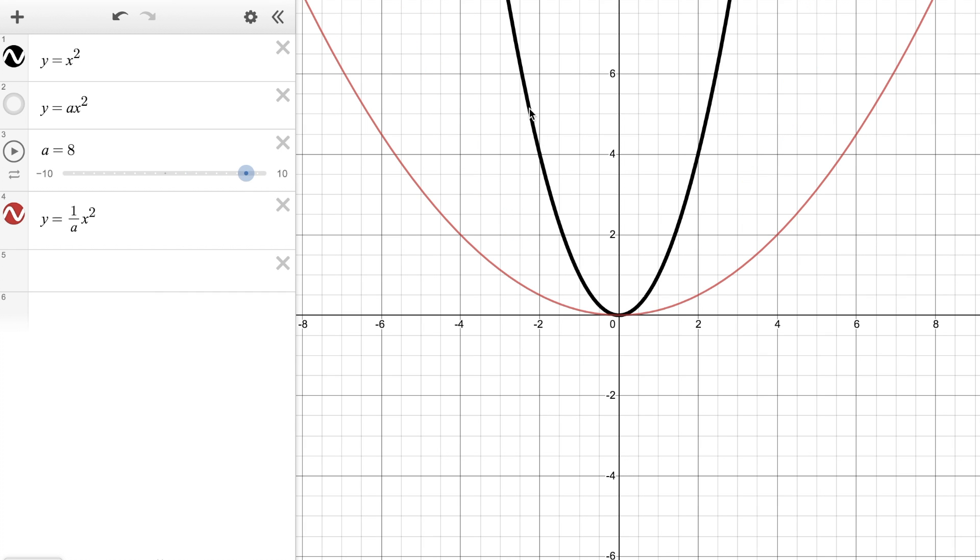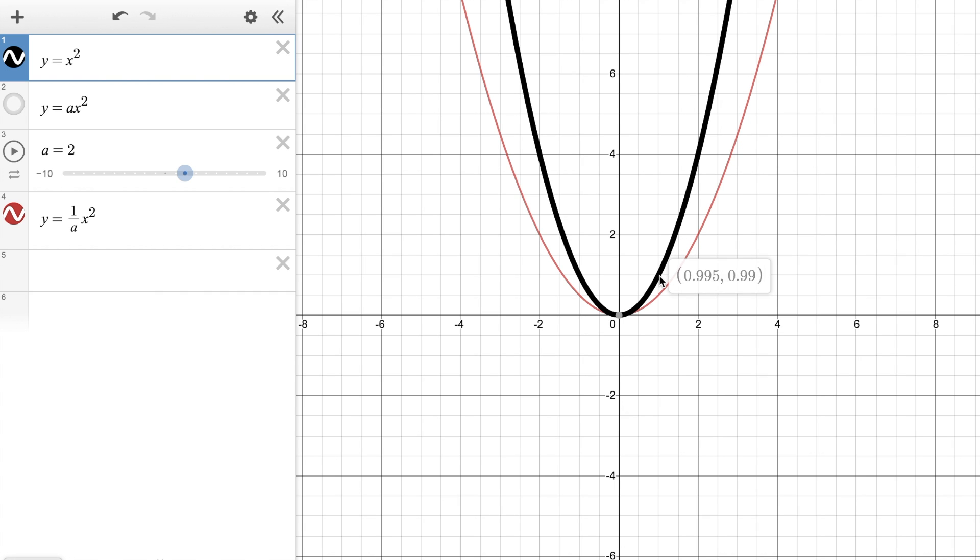What you'll see is that the base parabola is what we call vertically compressed by a factor of that a value. So on the base parabola where I had one one I'm now dividing that y value of one by two to get a new y value of 0.5 or one half.